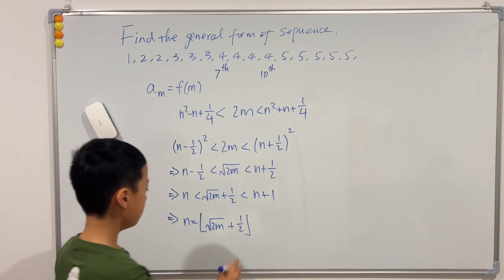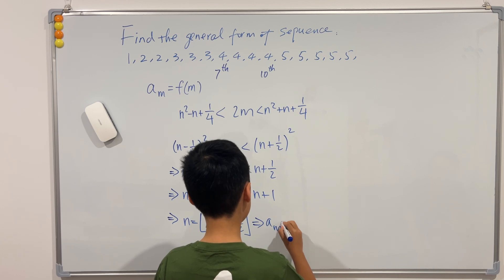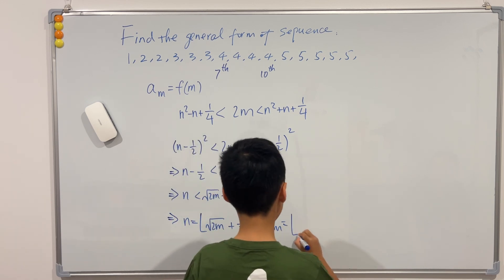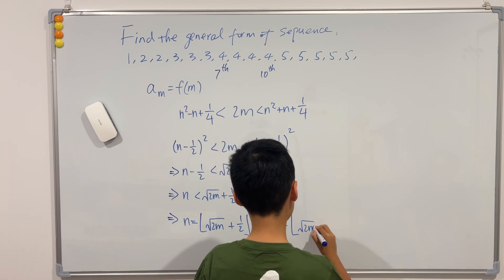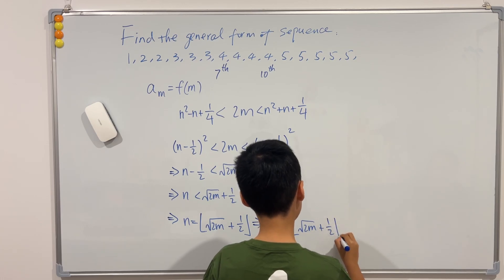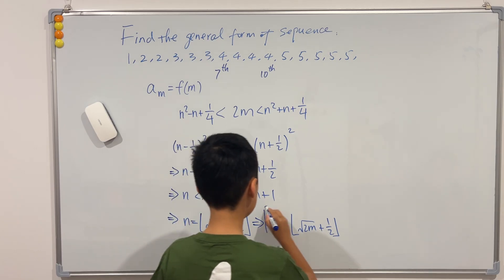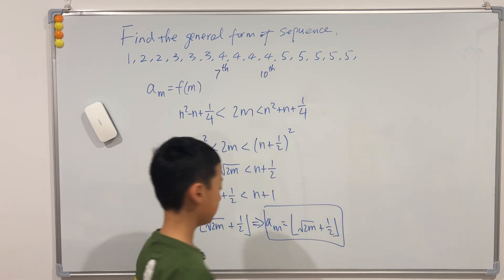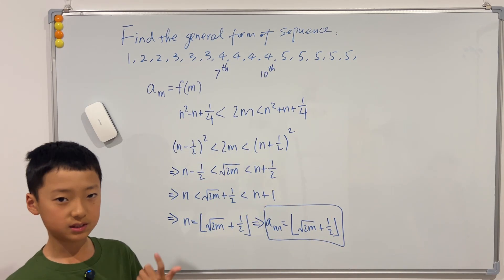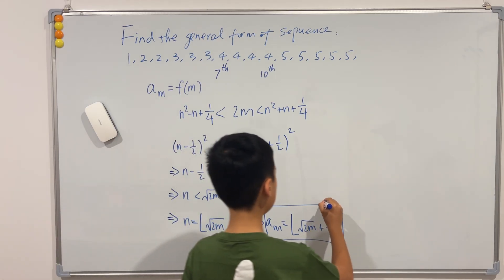So we know that a_m can just be written as this. Okay, so this should be our formula. Now why don't we do some tests? Why don't we test the values for n equals 20 and n equals 21?